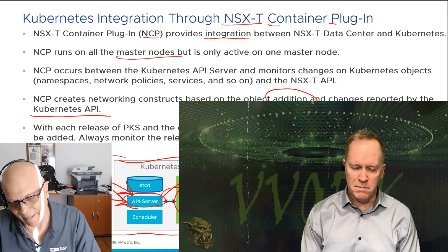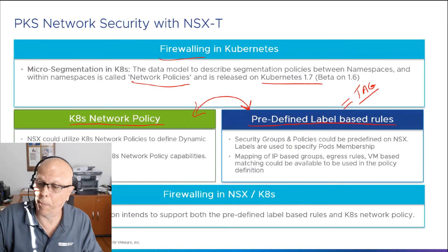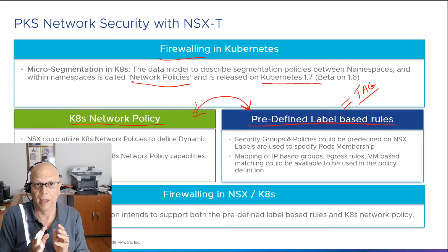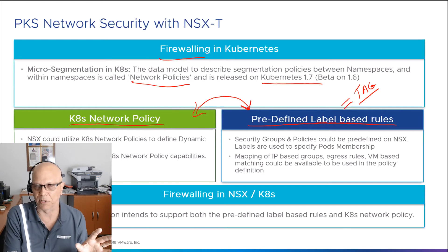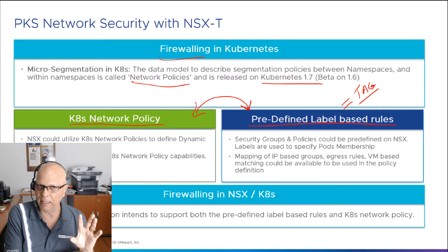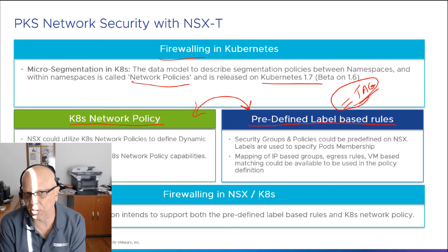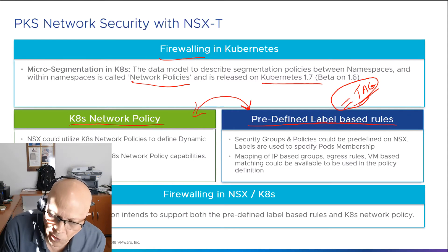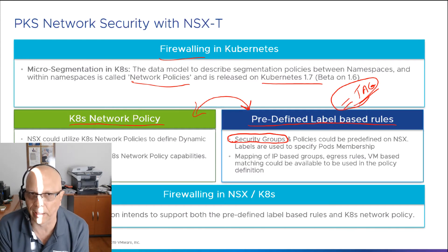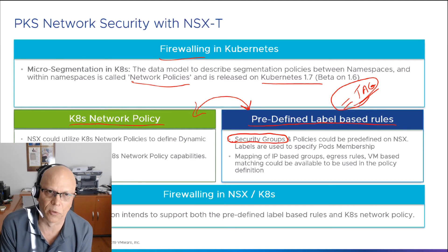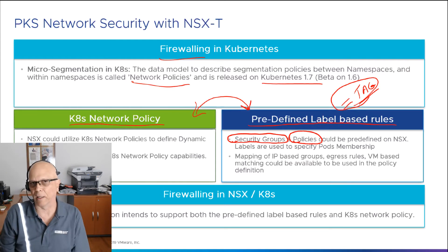The NSX-T manager administrators control what those tags do. It's very similar to how we do things inside vSphere — we might make a group or do something based on the presence or absence of a tag on an object. In NSX-T, we use those tags as the source or destination in a firewall rule. We use those tags to place respective workloads into a security group, and that security group becomes the source or destination in a firewall rule within a predefined security policy.